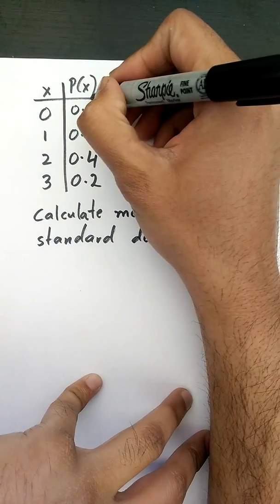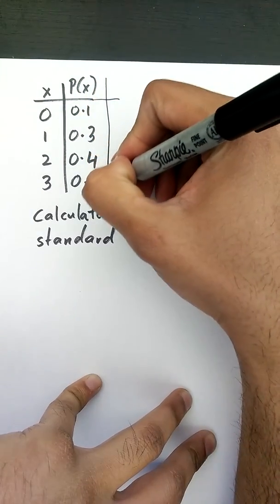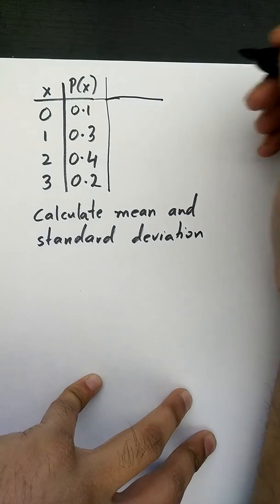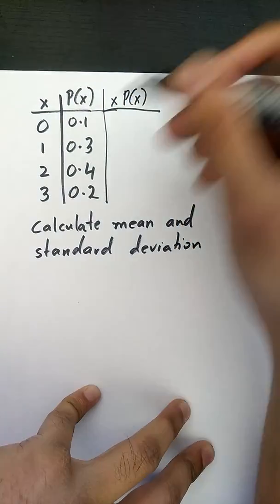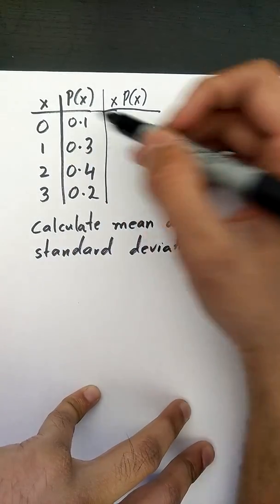In order to find the mean, I'm going to extend this table and my first column is basically x times p of x. You want to multiply these two columns to give you this column here.